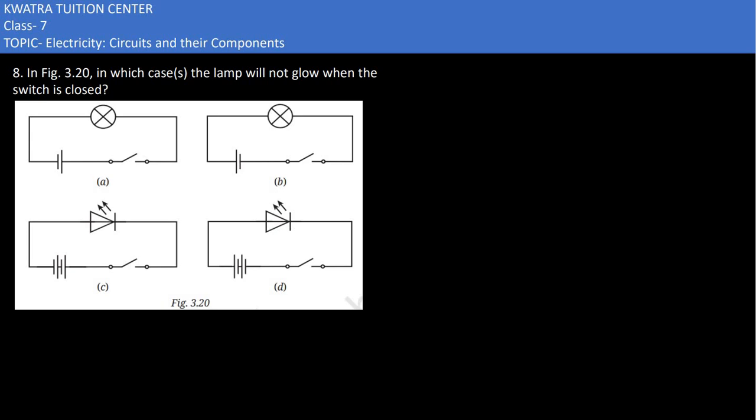Moving to the next part, it says in which case the lamp will not glow when the switch is closed. Now in the first one, if you close the switch, the current would pass through this way and reach the lamp, completing the circuit. So it would glow in the first case.